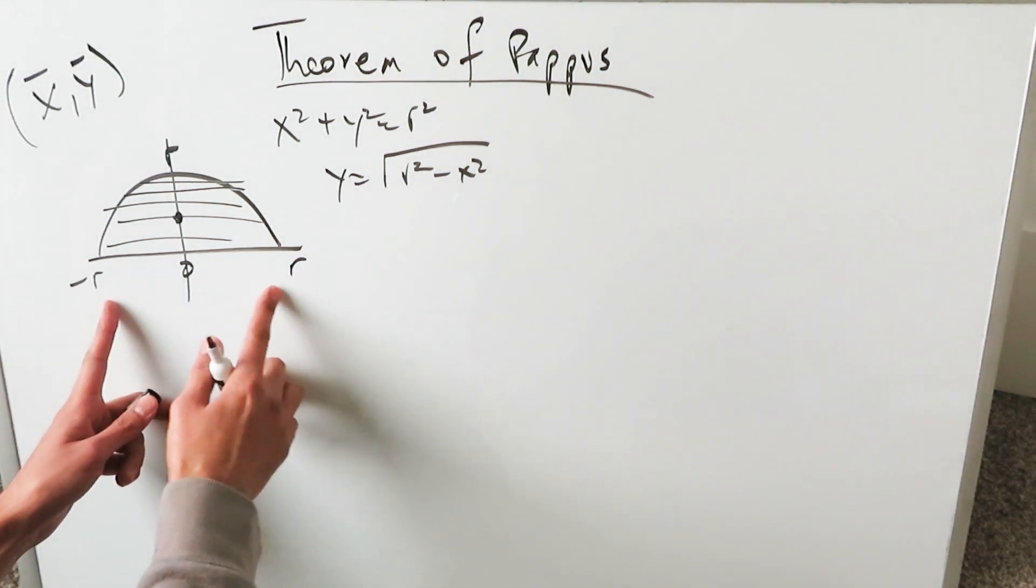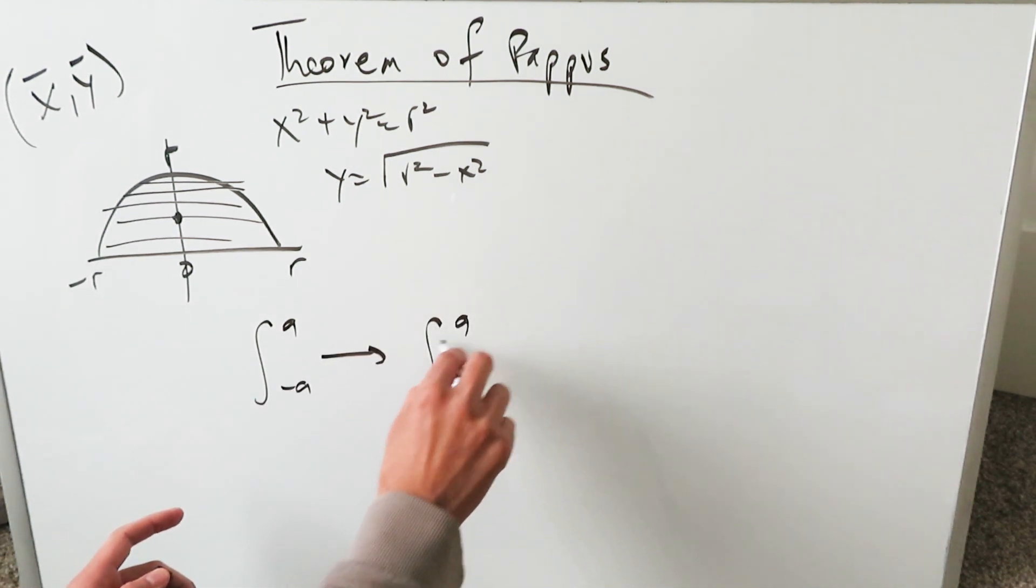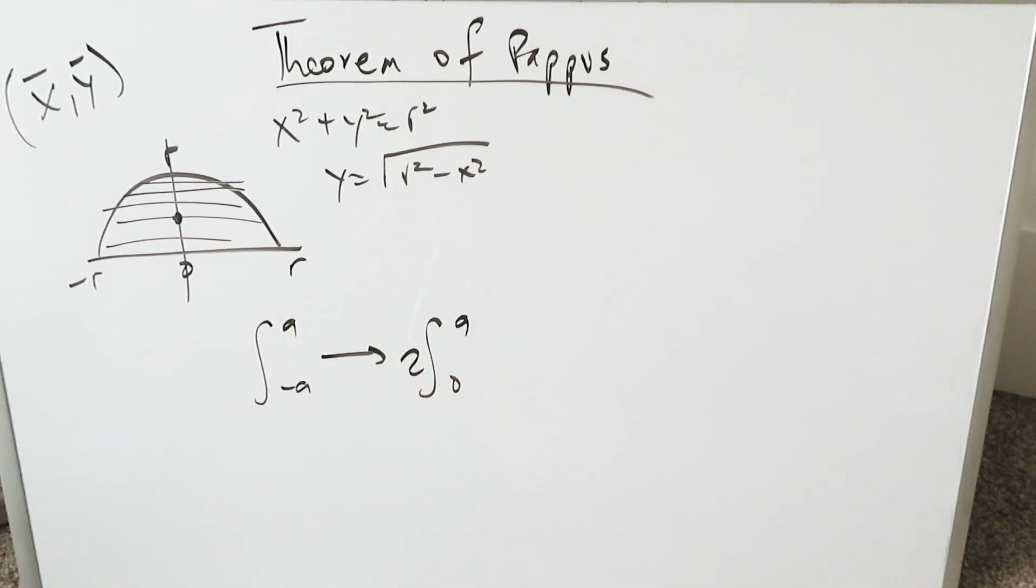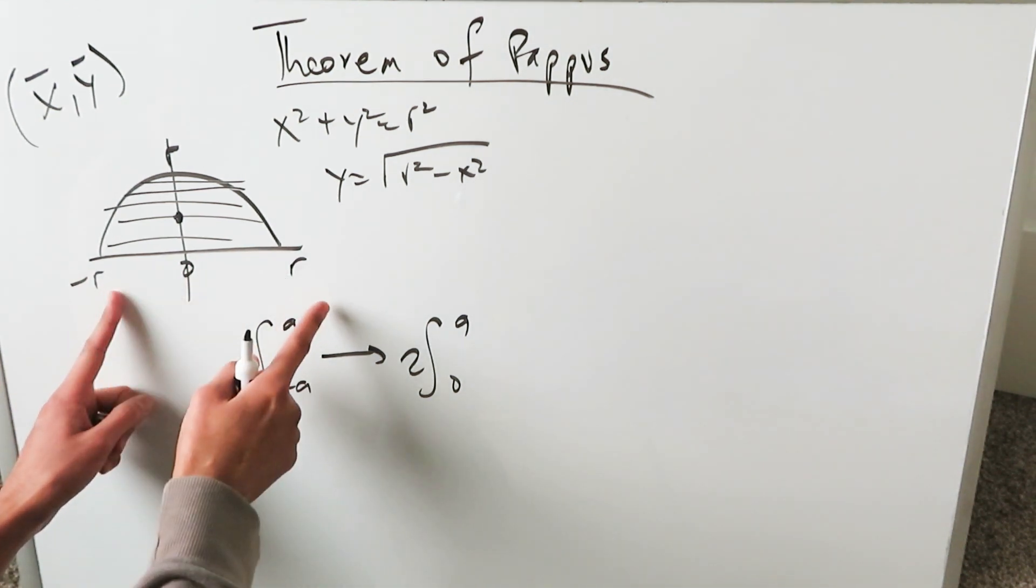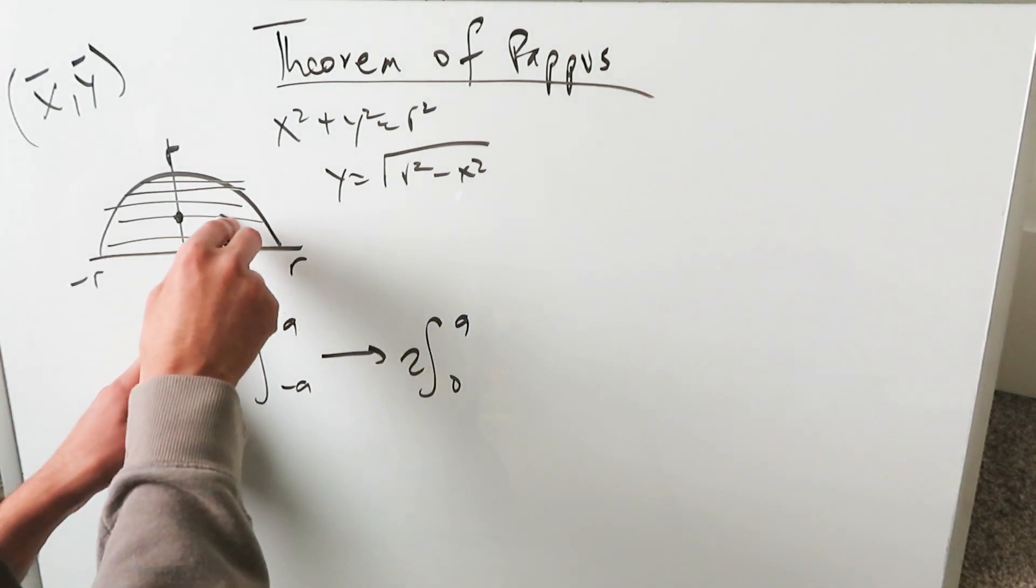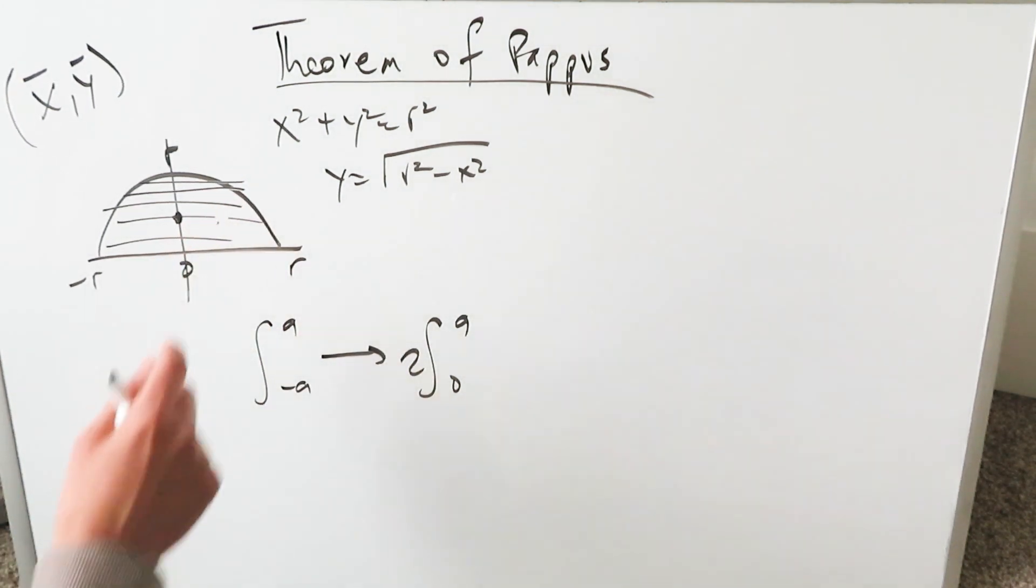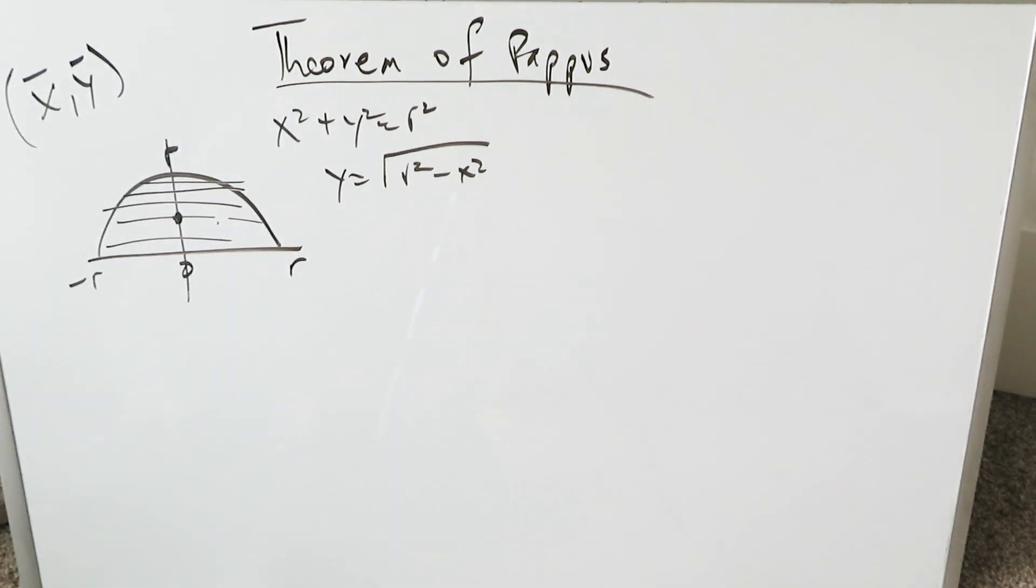When you're doing centroid calculations and you have an even function, do not use the even function property of integrals where you would be looking at a -a to a integral. Then you convert it to 0 to a. That'll totally distort and destroy your center of mass calculation because you want to do a center of mass from the extremes of your limits. Don't use the even function property of integrals for center of mass calculations when an even function comes through.